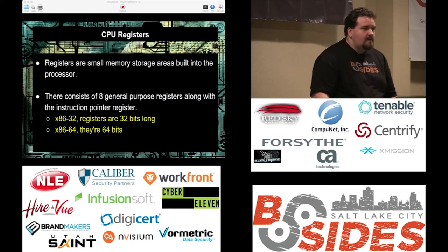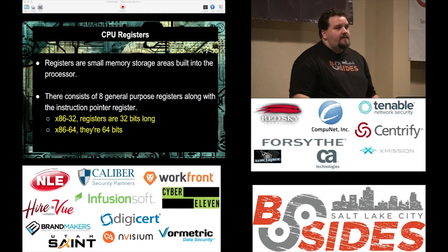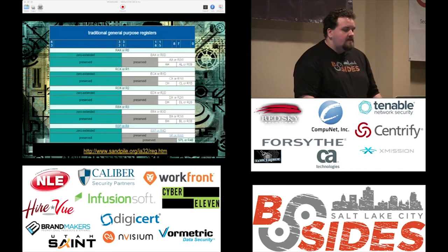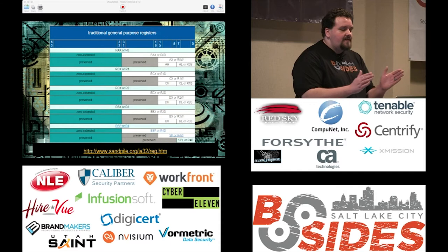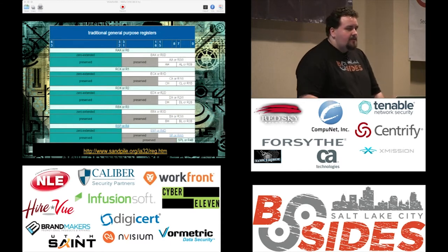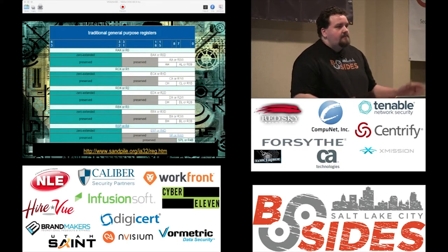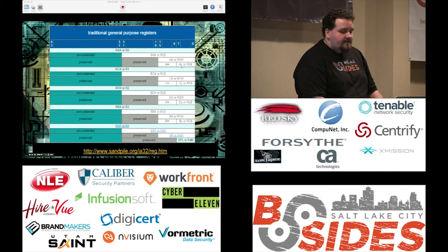In 32-bit, registers are 32 bits long; in 64-bit machines they're 64 bits. The R prefix is the 64-bit version — so RAX is 64-bit, EAX is 32-bit. You can also see references to the lower portions like AH and AL. Instead of looking at the entire register, you're just looking at a small section: AL gives you the first 8 bits, AH gives you bits 8 through 16.